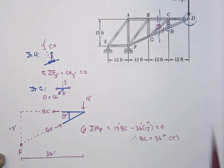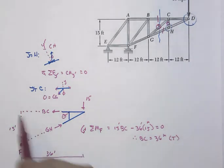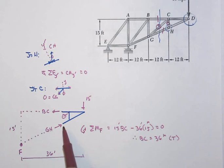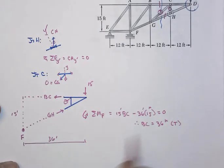And then, number 3, GH. Well, let's see if we can't be also similarly clever about this. And I think that there's no easy spot that I see right off the bat. So instead, what I'm going to do is just sum forces in the Y to get this. I'll have minus 15 plus the Y component of GH, right?